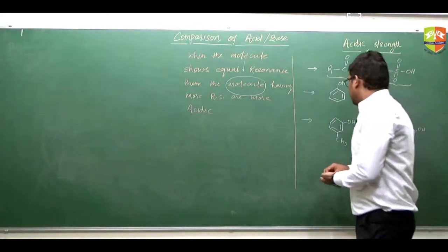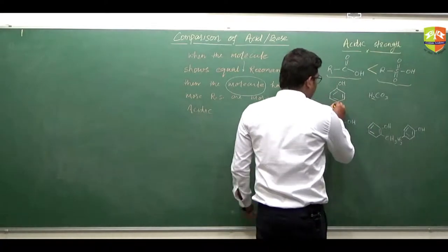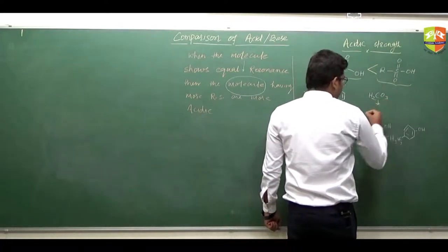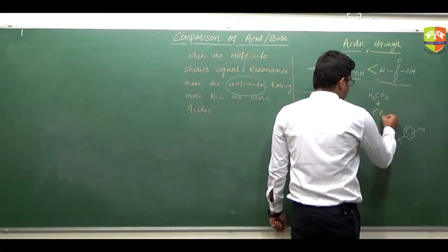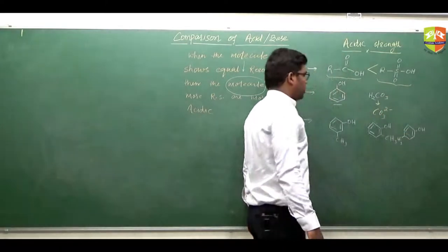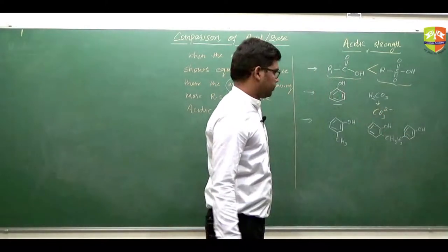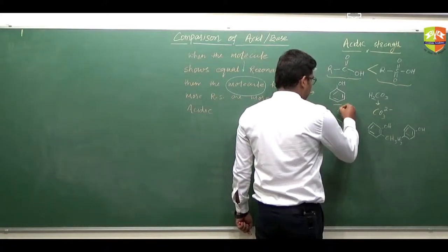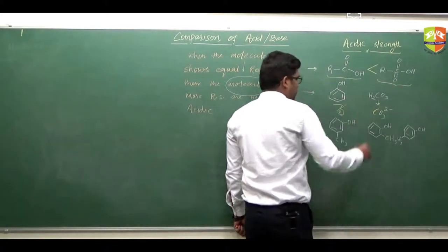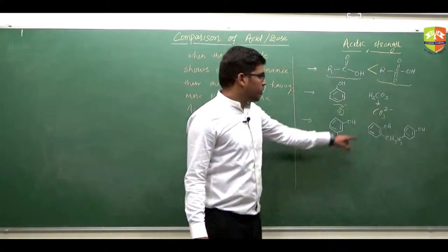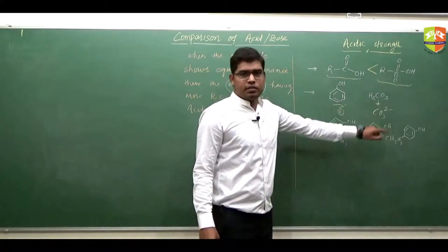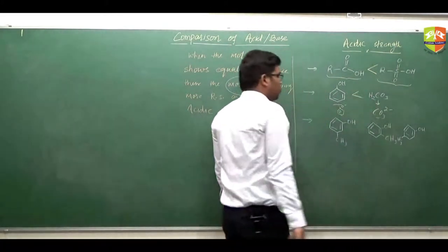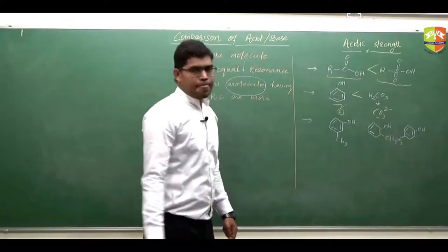Similarly, here you see phenol and CO₃²⁻. CO₃²⁻ is the conjugate base of H₂CO₃, and for phenol the conjugate base is the phenoxide ion. So here we have equal resonance, and because of this equal resonance, H₂CO₃ is more acidic.